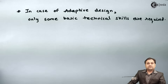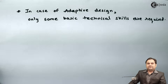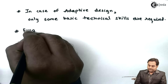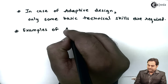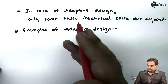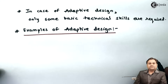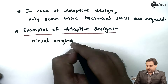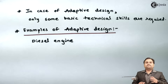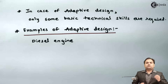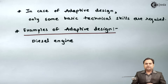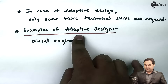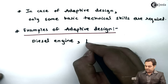A person who is an adaptive designer needs just basic technical skills to make changes in the design. The best example of adaptive design is the diesel engine. As we know, the diesel engine is already existing and in use, so if we make any small modification in it, that would be termed as adaptive design. So the diesel engine comes under the category of adaptive design.